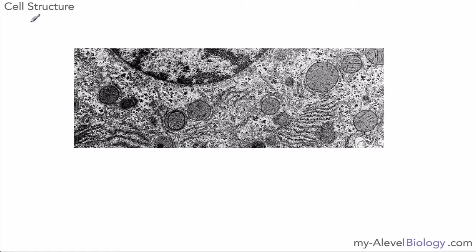For our video today we're looking at cell structure — specifically cell ultrastructure, which involves looking in much more detail at the types of structures you see within a cell. Here we have an electron micrograph produced by a transmission electron microscope, which has a high resolution and high magnification that allows us to see all this extra detail.